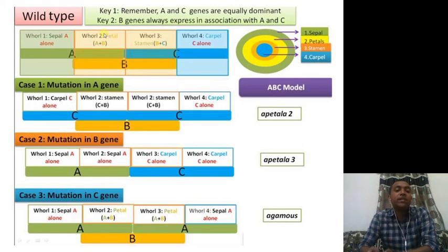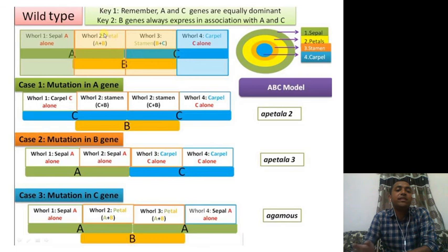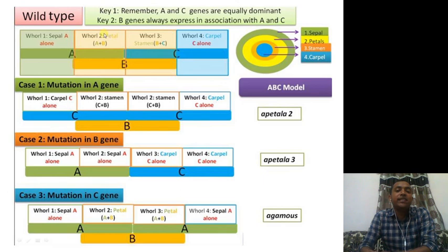Let us take Case 1: mutation in gene A. The moment mutation occurs in gene A, gene A is replaced by gene C, because A and C are equally dominant. So whorl one, which was supposed to be A, is now replaced by C — resulting in a carpel. Whorl two, expected to be A plus B, now becomes C plus B instead.